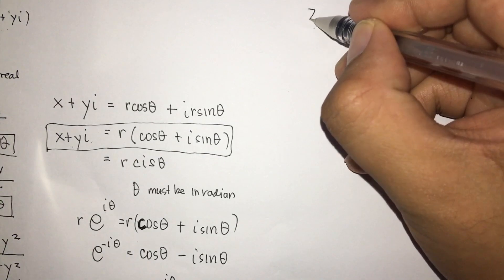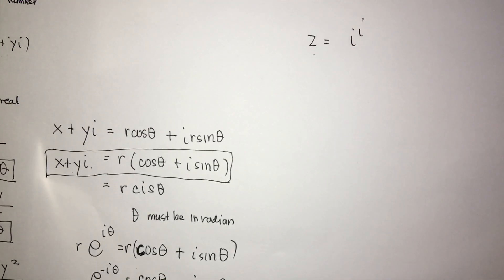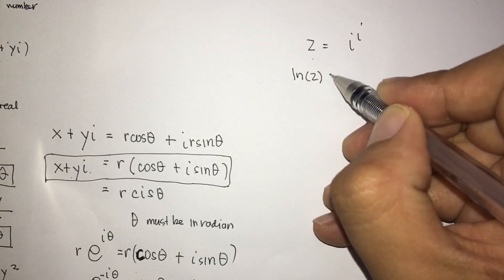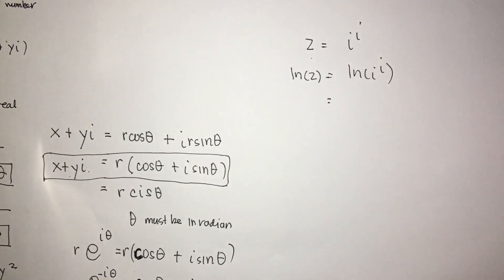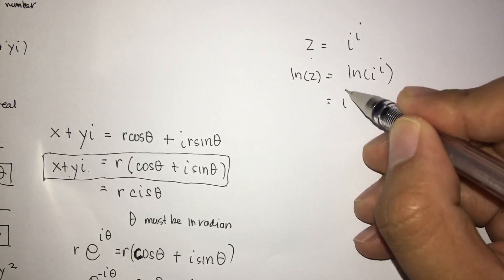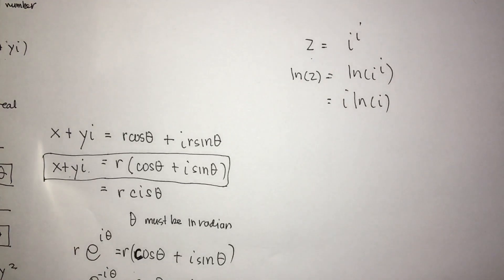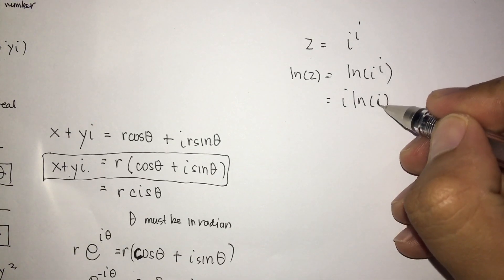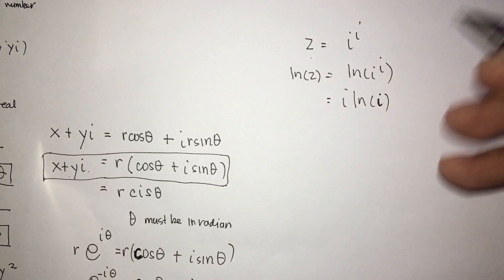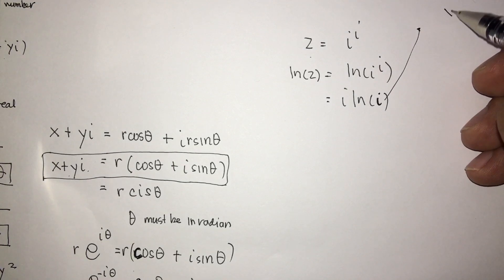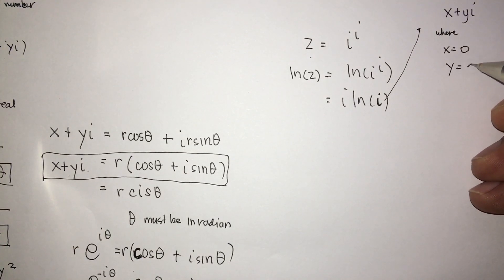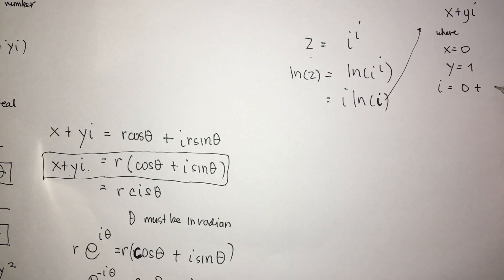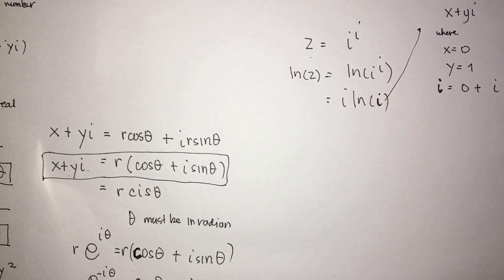If we let z equal i raised to i, and then take the natural logarithm of both sides, we have ln z equals ln of i raised to i, which simplifies to i ln i. Now we can transform i, which is in the form x plus yi where x equals 0 and y equals 1, since i equals 0 plus 1i. We want to transform this i into its Euler's identity form.